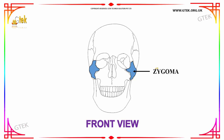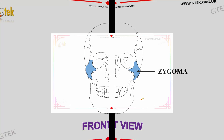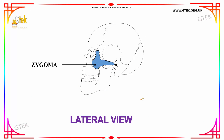Next we have the zygoma bone. These are two bones on either side of the human skull in the cheek region. This is the front view of zygoma's location in the human skull. Next we have the lateral view of the zygoma, which is located on either side of the human skull.